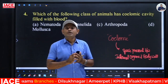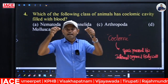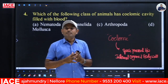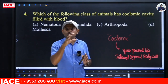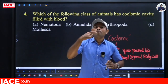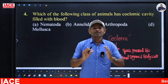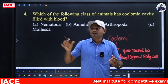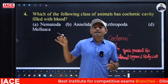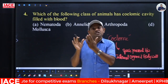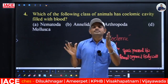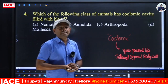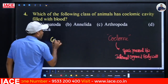When slaughtering a sheep or goat, after removing the skin, a muscle layer is seen surrounding the internal organs. Once that muscle layer is removed, the internal organs become visible. The space between the internal organs and the body wall or skin is called the coelom. Animals that possess a coelom are called coelomates.